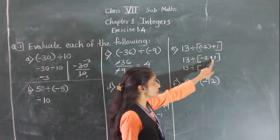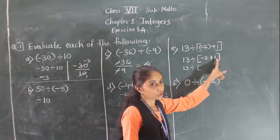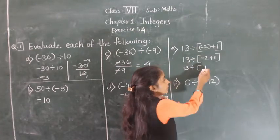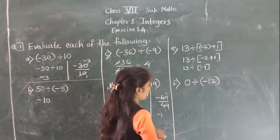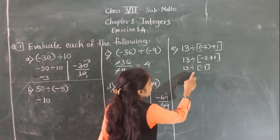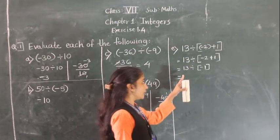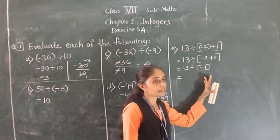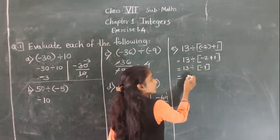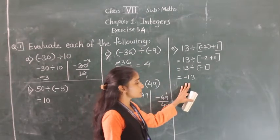Focus on the bracket side first. 2 minus 1 equals 1, and keeping the negative sign gives us minus 1. Now we have 13 divided by minus 1. When dividing a positive integer by a negative integer, we divide as whole numbers — 1 thirteen is 13 — and put a minus sign before the answer. So the answer is minus 13.